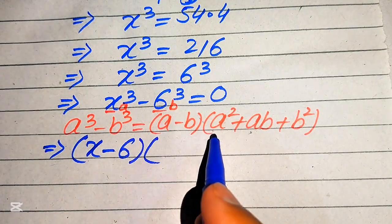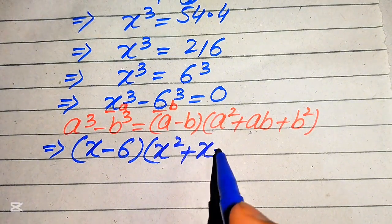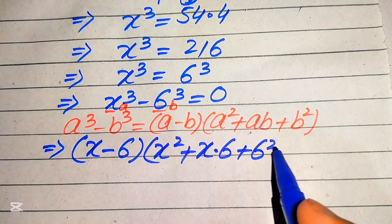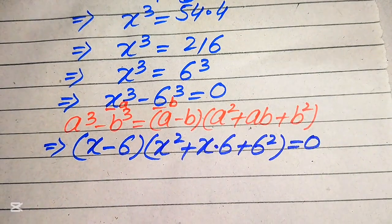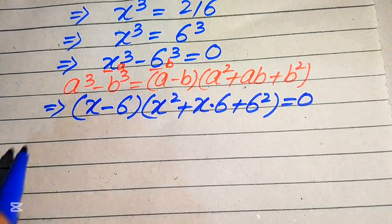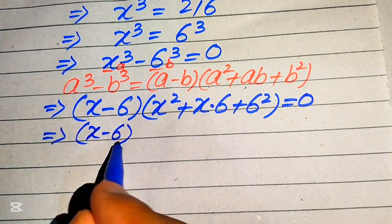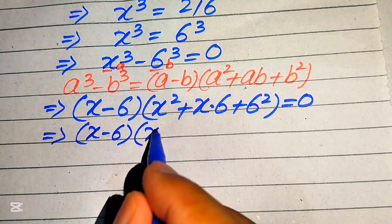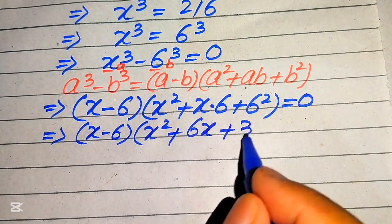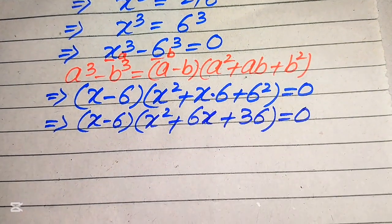Putting the values of a and b into the formula, we write: (x minus 6) times (x squared plus x·6 plus 6 squared) equals 0, which simplifies to (x minus 6)(x squared plus 6x plus 36) equals 0.